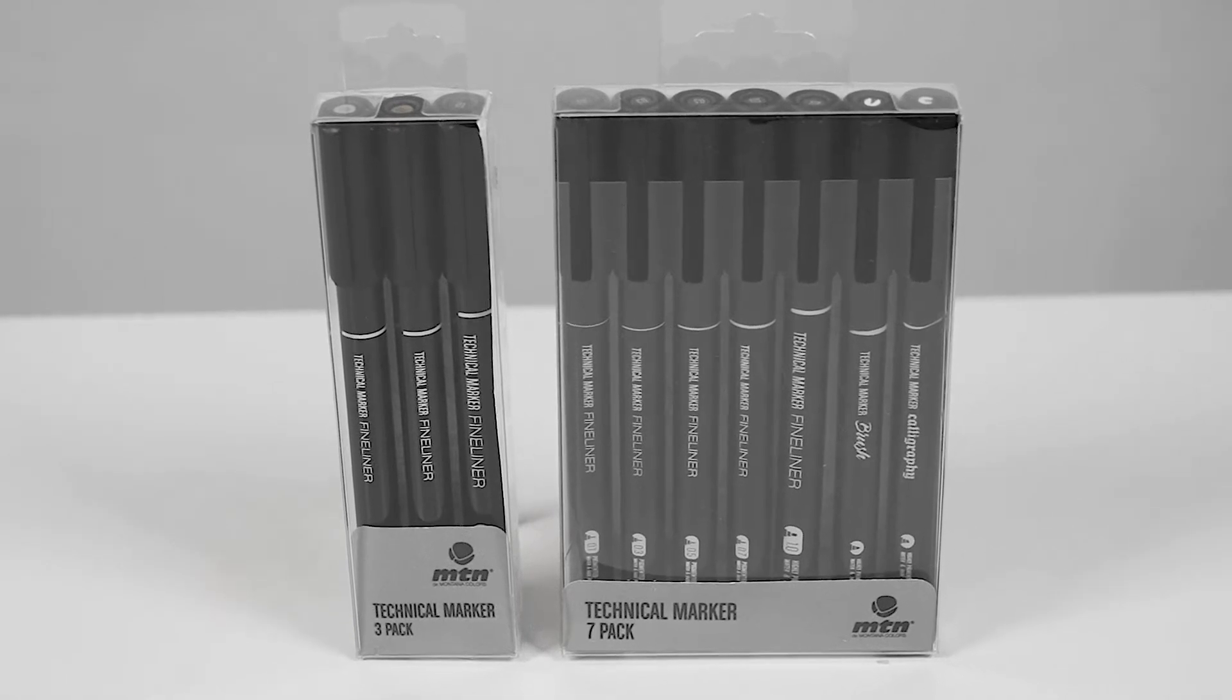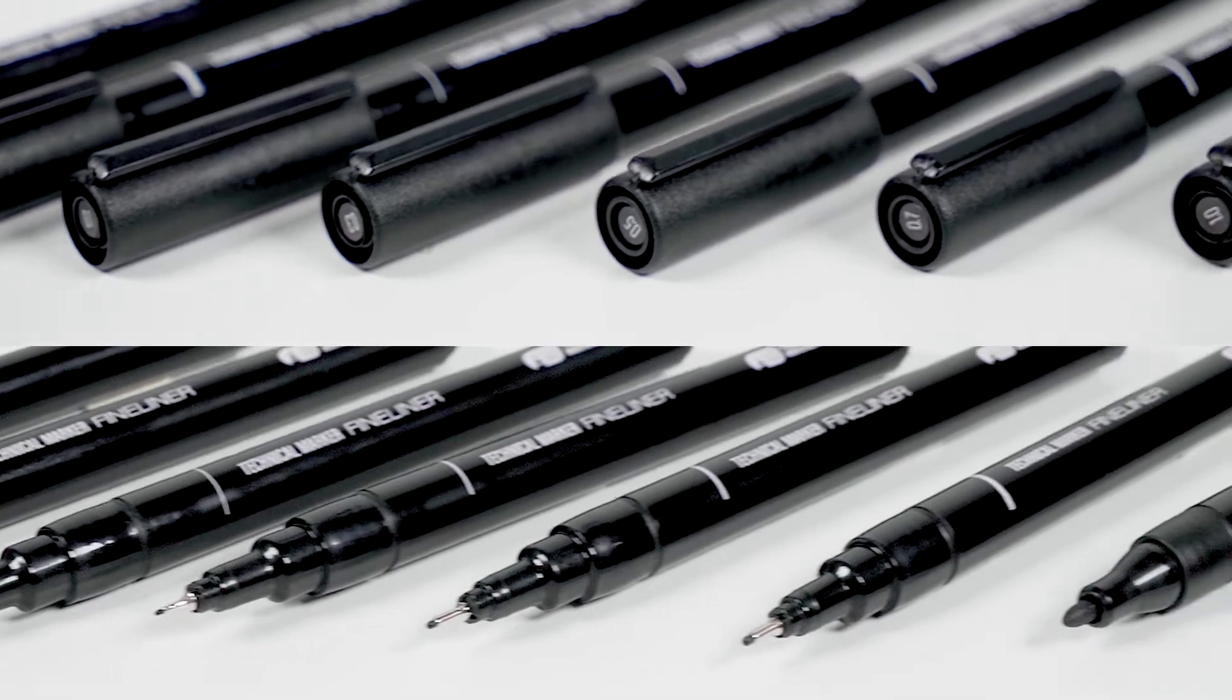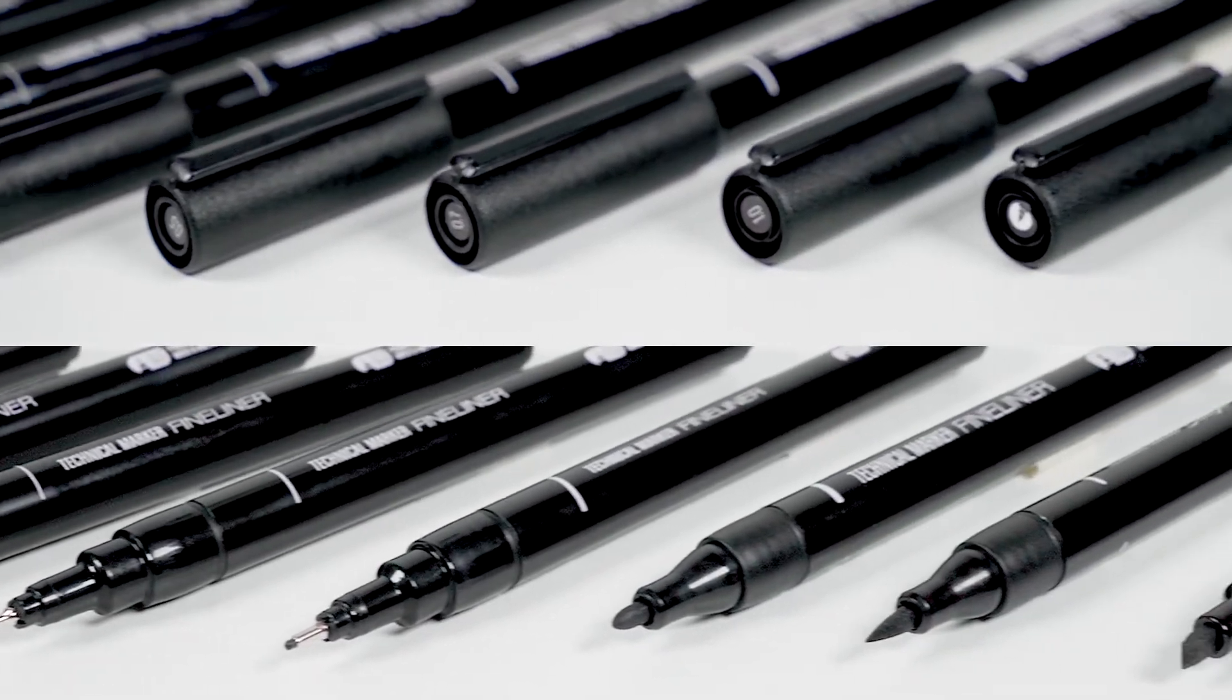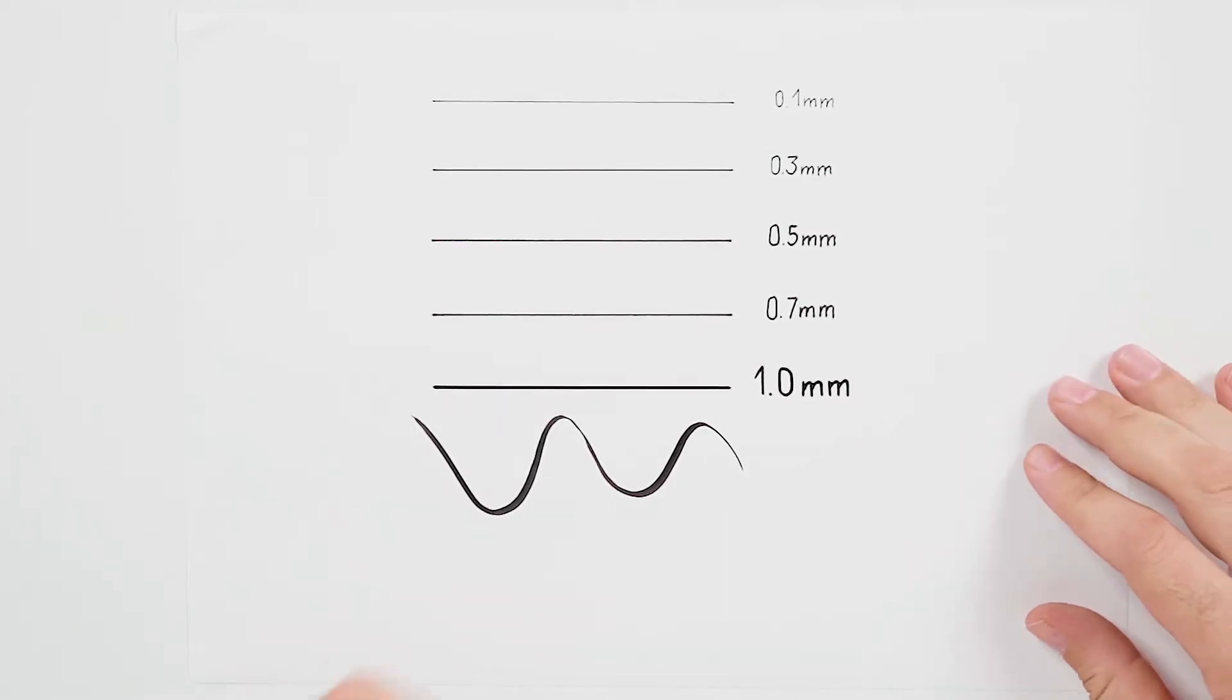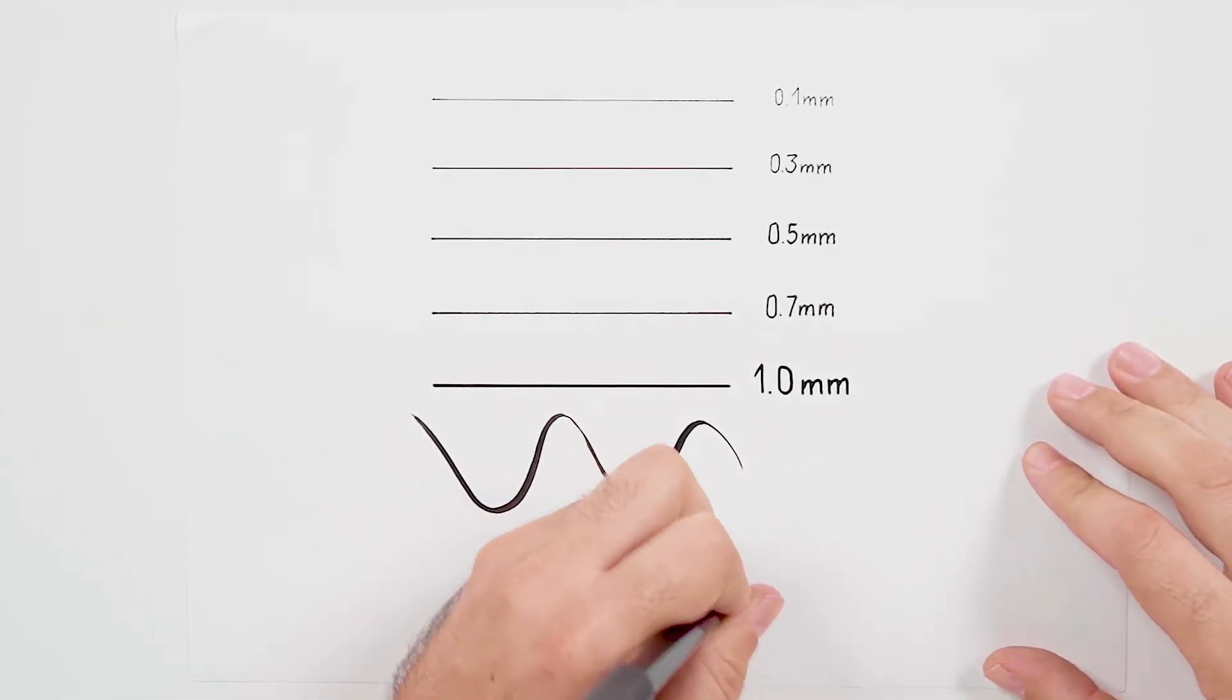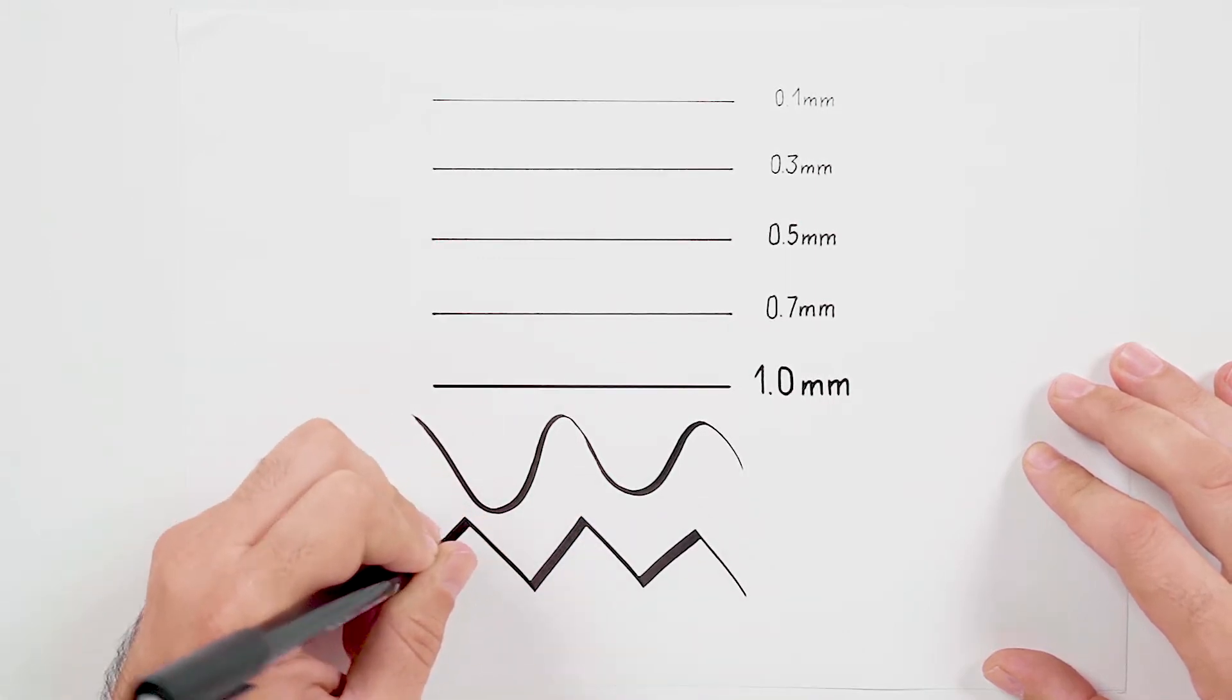Introducing the technical markers by Montana Colors. The technical markers are a line of high opacity ink markers with a variety of characteristics, especially useful for contouring, drawing or writing. The range includes a variety of tip formats and different thicknesses.